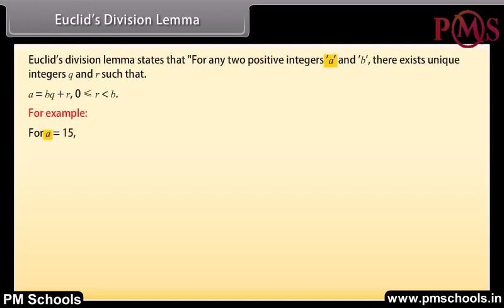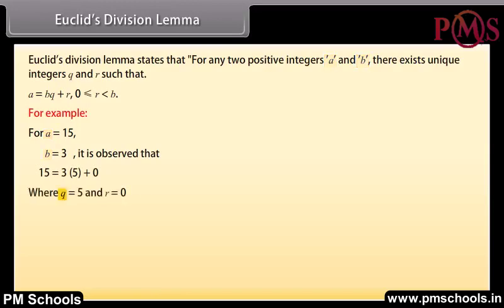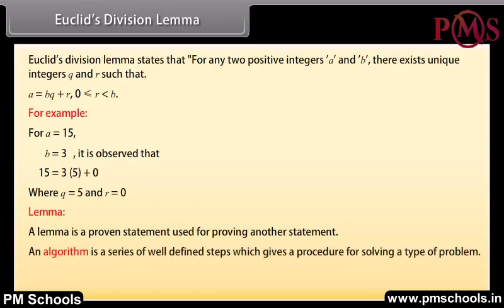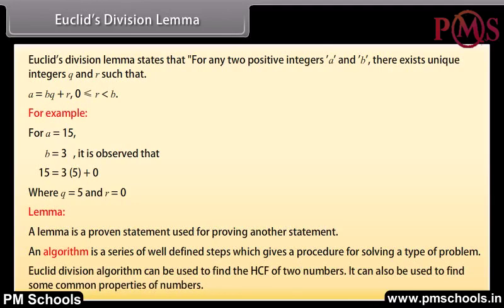For example, A equals 15 and B equals 3. It is observed that 15 equals 3 into 5 plus 0, where Q equals 5 and R equals 0. A lemma is a proven statement used for proving another statement. An algorithm is a series of well-defined steps which gives a procedure for solving a type of problem. Euclid's division algorithm can be used to find the HCF of two numbers and also to find some common properties of numbers.